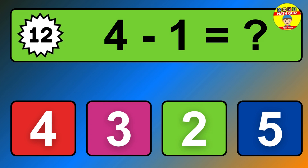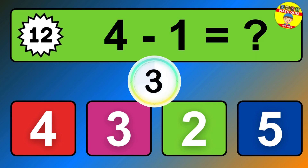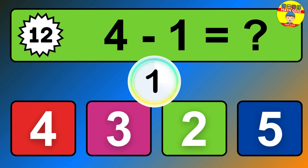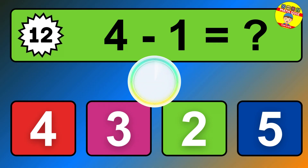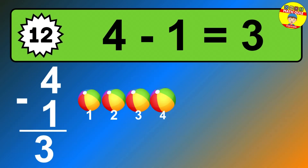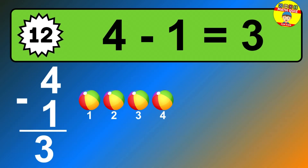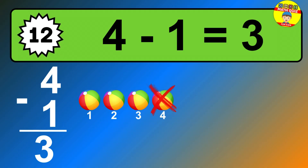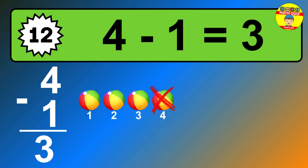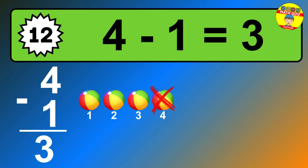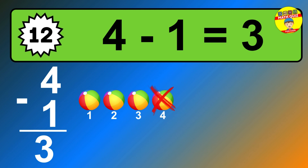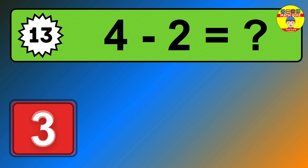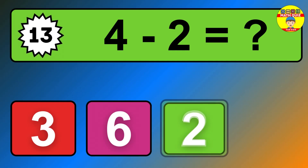Question 12. 4 minus 1 equals what? So the answer is 4 minus 1 is 3. Let's count it. 1, 2, 3.